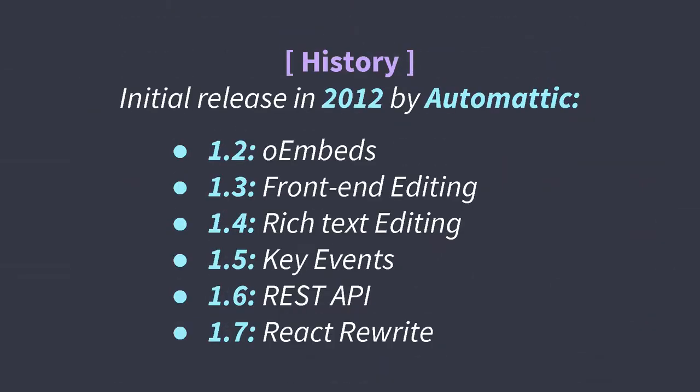Just a bit of history: as Simon said, it's been around a while. It's from 2012 and was built by Automattic. These are the release cycles we've had, and you can see they're feature-driven — embeds, front-end editing, which means someone can put posts in from the front end rather than logging into the dashboard; rich text editing with HTML. In version 1.5, key events were added — like the Guardian's feature where you click a button that takes you straight to a specific announcement. Then 1.6 added the REST API for better compatibility with later versions of WordPress.